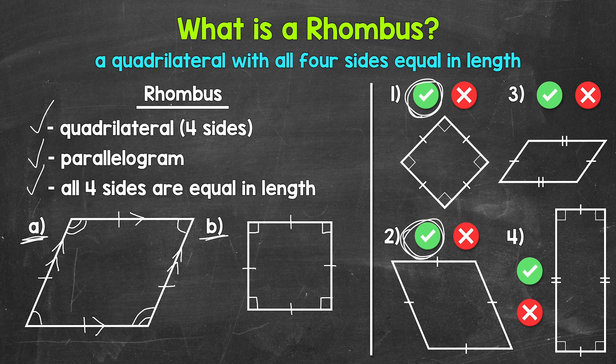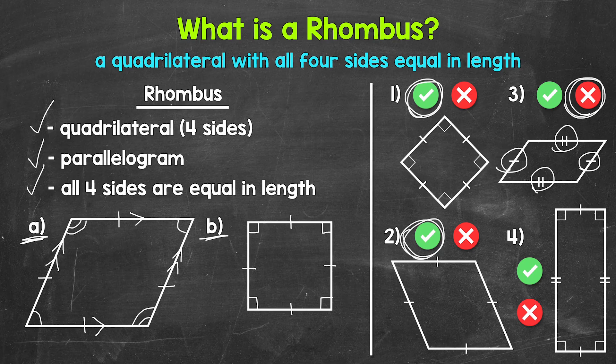Moving on to number three, we have a quadrilateral, but all four sides are not the same length. These sides are equal in length with one tick mark, and then these sides are equal in length with two tick marks. So no, we do not have four sides that are the same length — this is not a rhombus. And then lastly, for number four, we have a quadrilateral, but all four sides are not the same length, so this is not a rhombus.